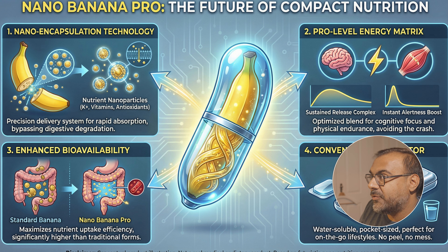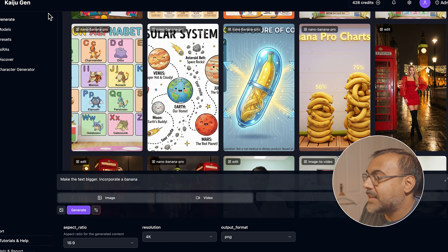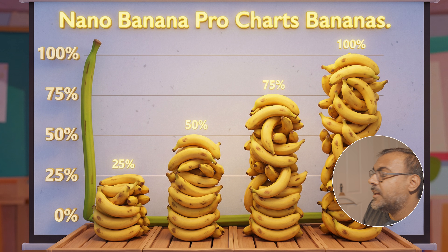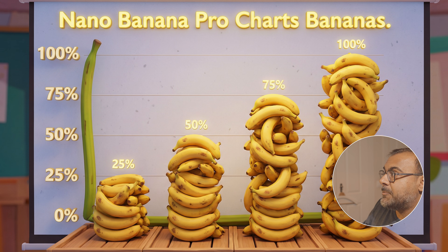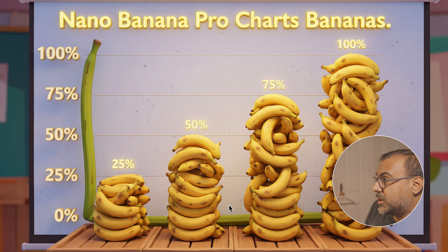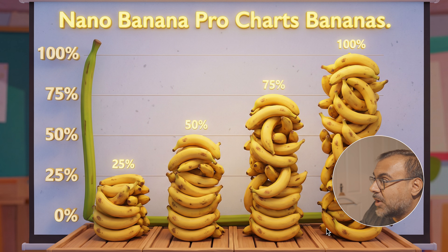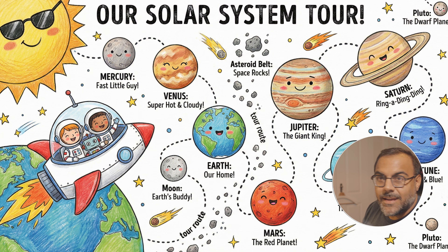Let's take this level of information and image context awareness to another level. Something that the previous Nano Banana couldn't do — or any image editing model for that matter — is create charts and infographics where it's aware of what the elements in the image are. I told it to create an image chart of bananas with the leftmost column showing 25%, 50%, 75%, and 100%, illustrated in the form of bananas. It understood it perfectly — correct columns, correct placement, correct height. It was even intelligent enough to add X and Y axes on its own. I didn't have to tell it to do that.